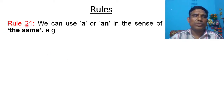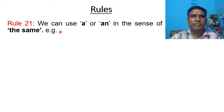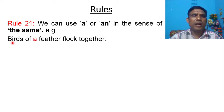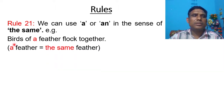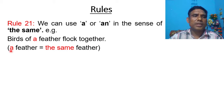Rule number 21: We can use A or AN in the sense of 'the same'. For example, 'Birds of a feather flock together.' Here, 'a feather' means the same feather. So, A is used in the sense of 'the same'.